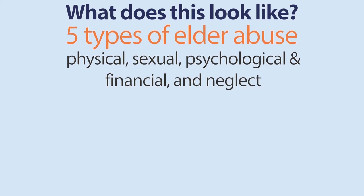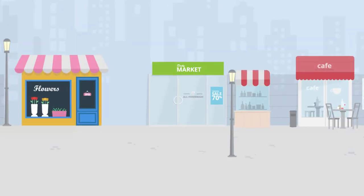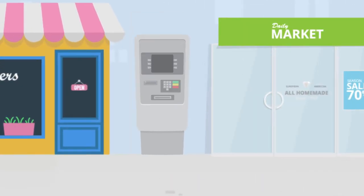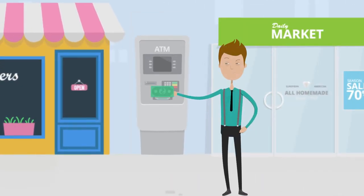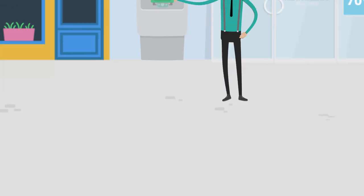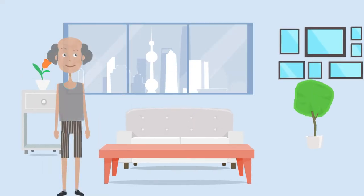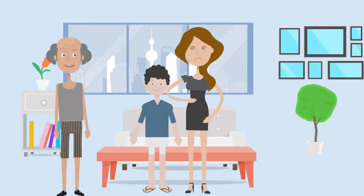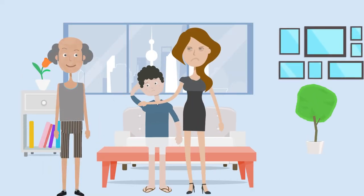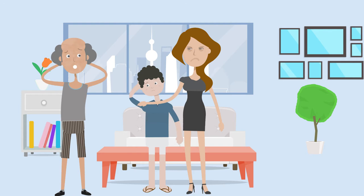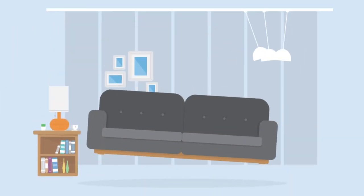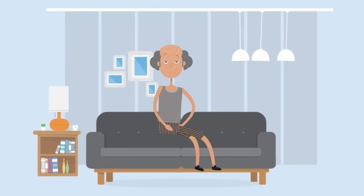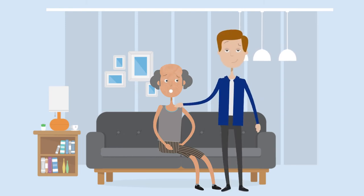Elder abuse is about taking money from your mother's bank account without her agreement. Elder abuse is about denying an old person access to family visits and isolating them. Elder abuse is about making physical contact without permission.